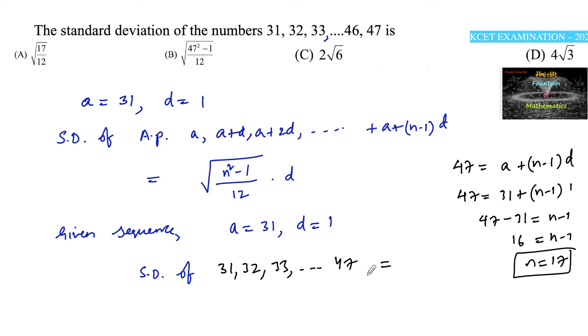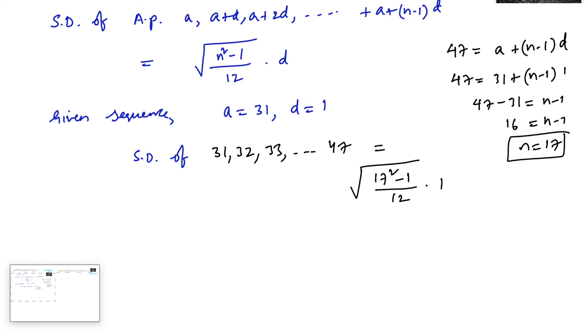So there are total 17 terms here, so we can add under root of 17 squared minus 1 upon 12 into common difference is 1. So 17 squared is 289, 289 minus 1 upon 12.